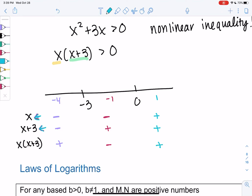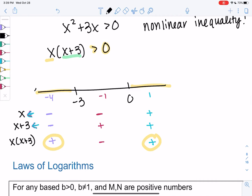And then since we're looking for greater than 0, we want the positive intervals. So my domain will be negative infinity to negative 3 and 0 to infinity. So these are all the numbers we're allowed to plug in.